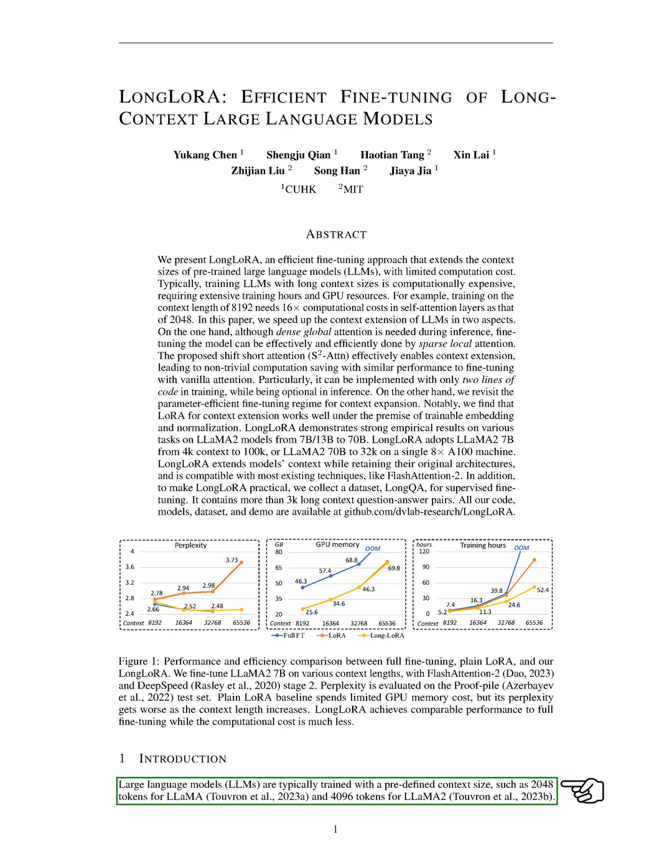We're going to discuss large language models, LLMs, like LLaMA and LLaMA-2, which are usually trained with a set context size, such as 2048 or 4096 tokens, respectively.